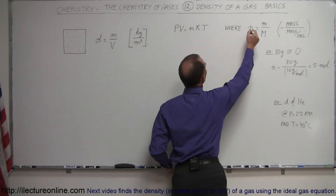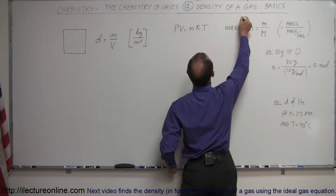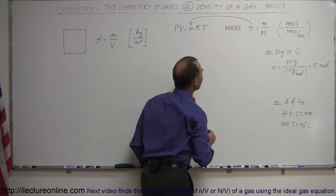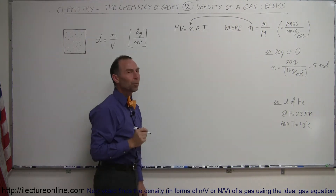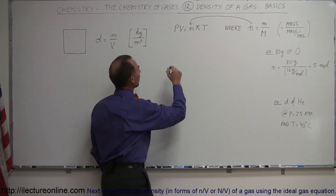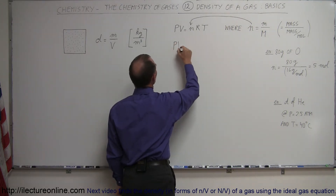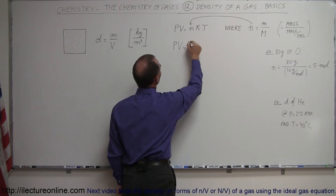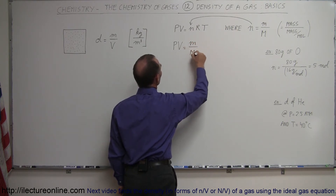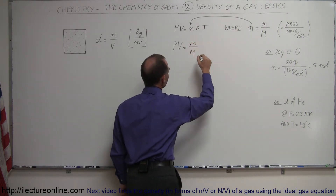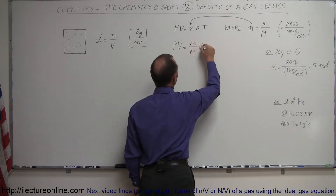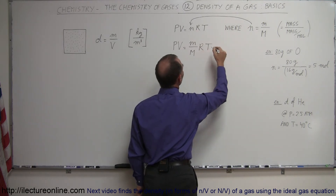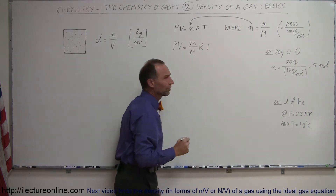What we're going to do is replace the number of moles in the ideal gas equation by mass divided by molar mass. So this now becomes: pressure times volume equals the mass of the gas divided by the molar mass, times the gas constant, times the temperature of the gas.